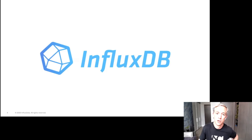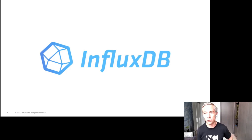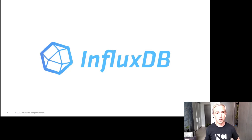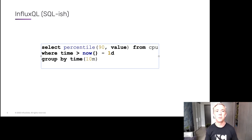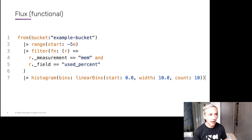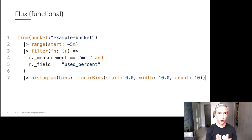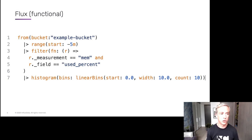InfluxDB IOx is the new open source core of InfluxDB, written in Rust — which is why it's called IOx, short for iron oxide — and it makes heavy use of Apache Arrow. For those not familiar: InfluxDB is an open source time series database created in late 2013, written in Go, currently at version 2.0. It has two query languages: InfluxQL, which looks kind of like SQL but isn't really SQL, and Flux, a fully functional scripting language that's basically a query planner, executor, and scripting engine in one.